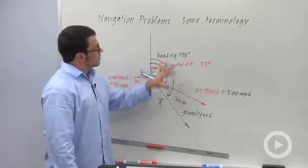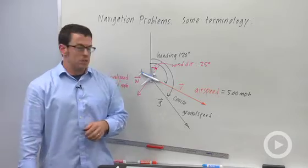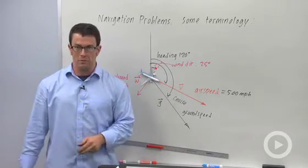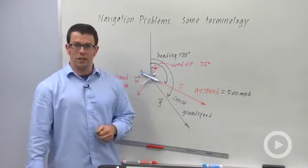So these are terms that we're going to be using in our navigation problems. Usually we'll be asked to find the true course and ground speed, given the velocity and the wind.